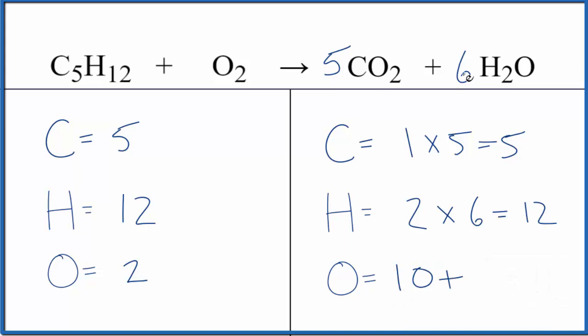Now it's pretty easy. We put a coefficient of eight in front of the O2. Two times eight gives us sixteen, and we're done - this equation is balanced.